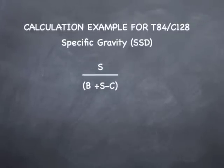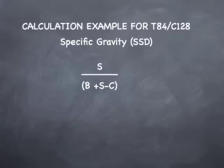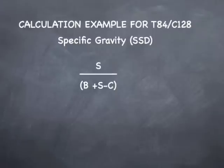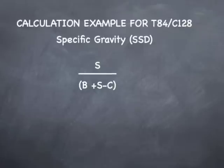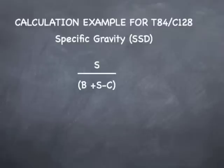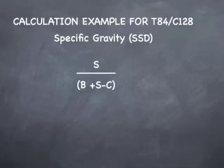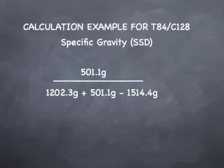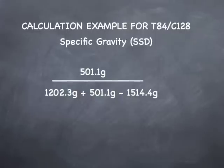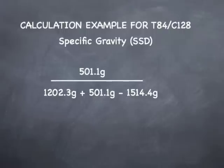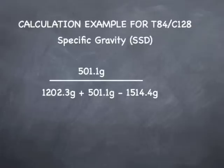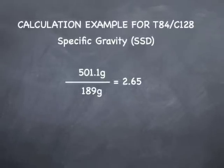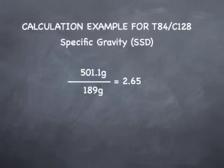Our first calculation is the bulk specific gravity in the SSD condition. We take the weight of the SSD specimen (S) and divide it by the weight of the mason jar filled with just water (B), plus the weight of the SSD specimen (S), minus the weight of the SSD specimen with the mason jar filled with water to the calibration mark (C). Plugging in our numbers: 501.1 divided by (1202.3 + 501.1 − 1514.4) = 501.1 divided by 189, giving a specific gravity of 2.65.